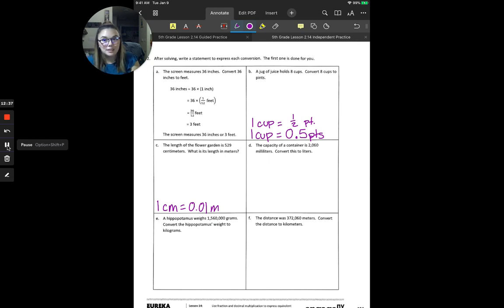D is looking at milliliters to liters. Again, we just talked about those a minute ago. So, that is one milliliter is equal to one-thousandth liter. And E is grams to kilograms. So, one gram is equal to one-thousandth kilograms. And F is meters to kilometers. So, that's one meter is equal to one-thousandth kilometer. So, those are all of your conversion factors if you need them.